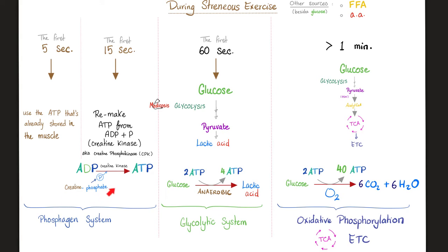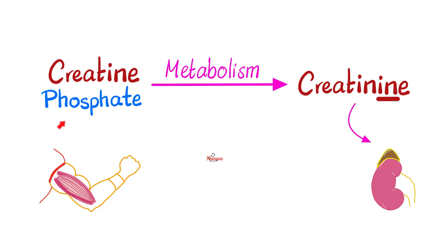Where does creatine kinase get that extra phosphate? From creatine phosphate. When you take the phosphate away from creatine phosphate, it becomes just creatine. This enzyme can be called creatine kinase or creatine phosphokinase — same exact thing. That's why if you have a disease that destroys your muscles, like rhabdomyolysis, your muscles break down and release their contents, including creatine phosphokinase, into the blood. You can measure this as a clue that muscle destruction is occurring. Creatine phosphate is an important ATP source for muscle, but its metabolic fate is to become creatinine, which goes to the blood and ends up in the kidney for excretion into the urine. Therefore, creatine phosphate and creatinine both depend on muscle mass — a more muscular person will have more creatine phosphate and more creatinine.